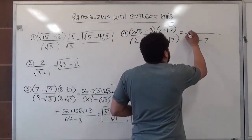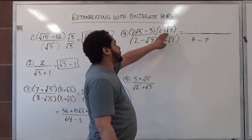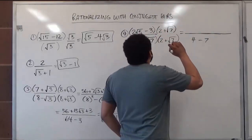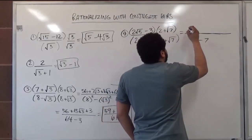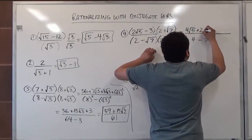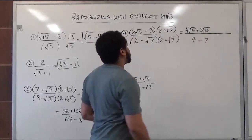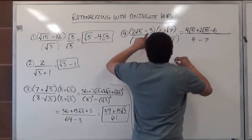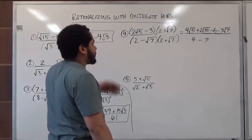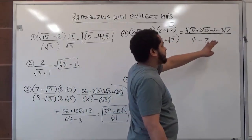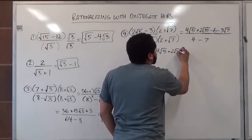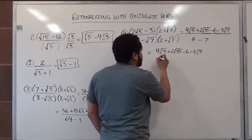To be safe, distribute one term to both at a time: 2 radical 5 times (2 plus radical 7), minus 3 times (2 plus radical 7). So 2 radical 5's times 2 is 4 radical 5's; 2 radical 5's times positive radical 7 is 2 radical 35's, because we multiply the insides of the radicals. Then negative 3 times 2 is negative 6; negative 3 times radical 7 is negative 3 radical 7's. The top has nothing that can be combined, giving 4 radical 5 plus 2 radical 35 minus 6 minus 3 radical 7's over negative 3.